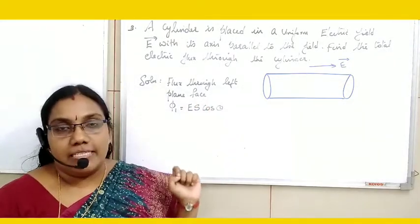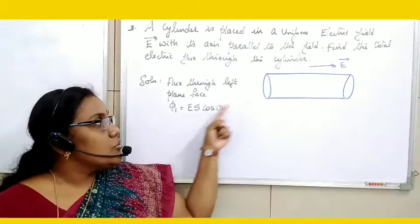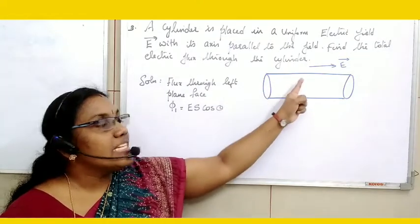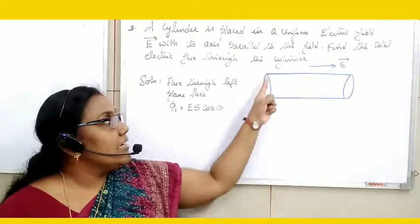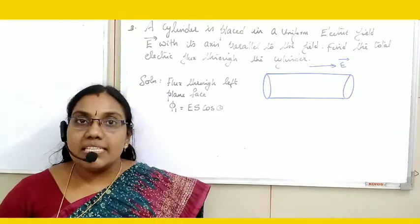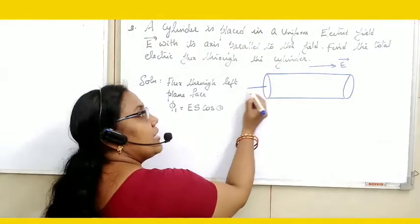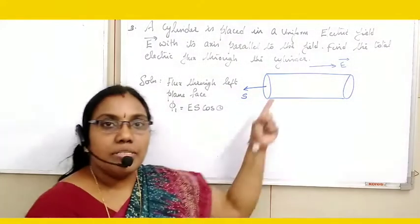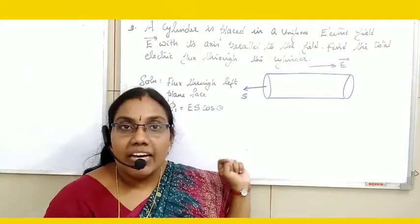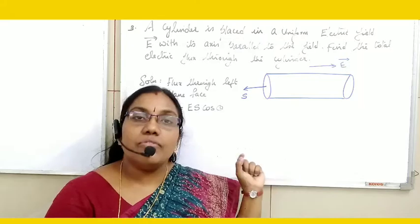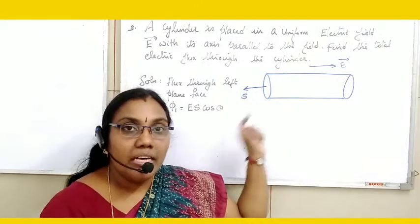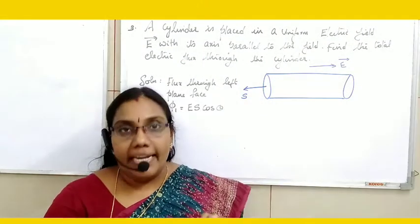Electric flux through the left plane face: electric field is towards right, and the area vector of the left face is outward normal — towards left. So electric field and area vector are in opposite directions, therefore theta = 180°.